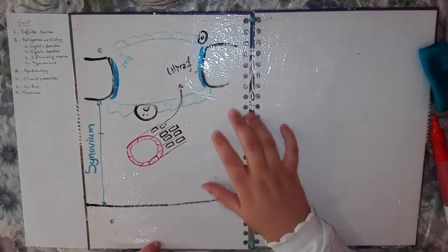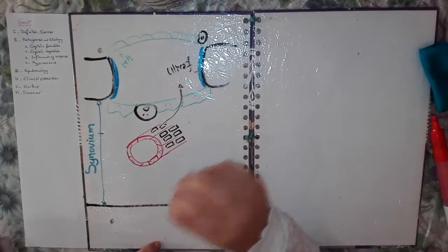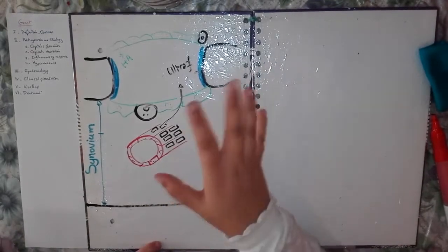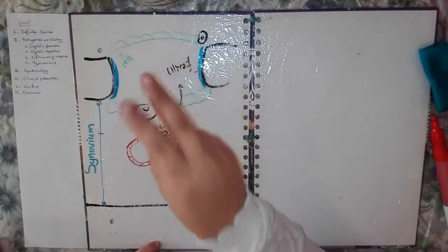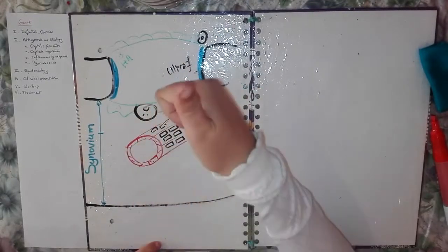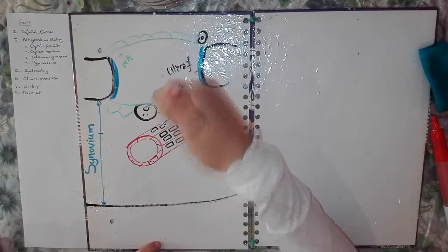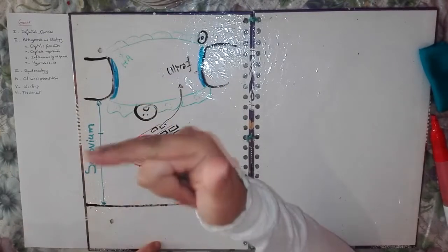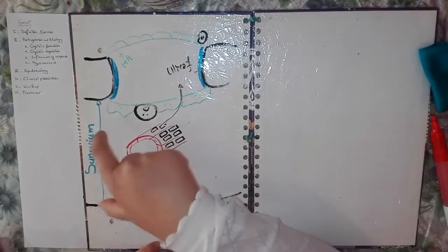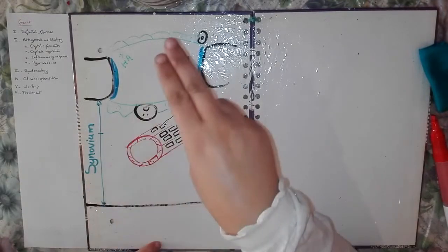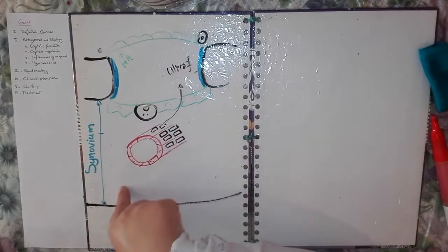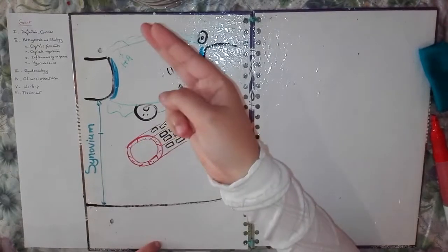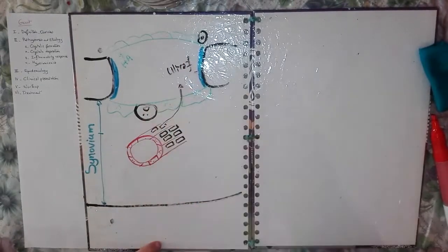I guess today is the international day of number 2. Because if you remember, in the beginning we said gout, two words. Hyperuricemia, inflammation, pathogenesis, two questions, where and when. Then, synovium, two layers, intima, subintima. The intima, two types of cells. Type 1, type 2.